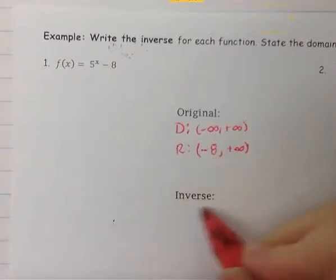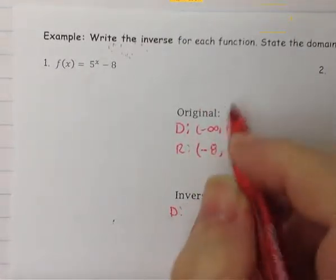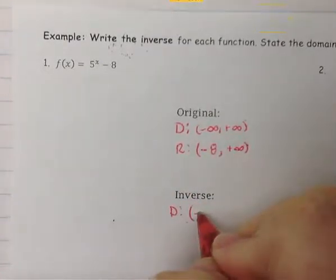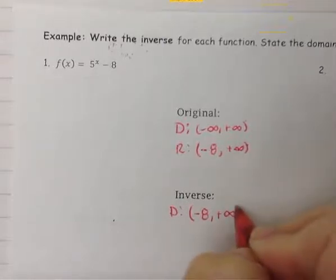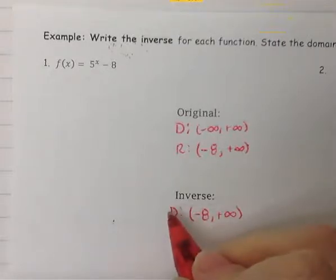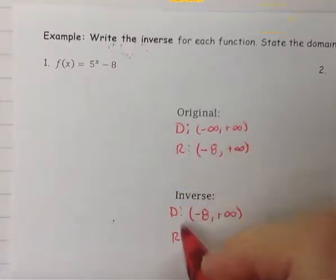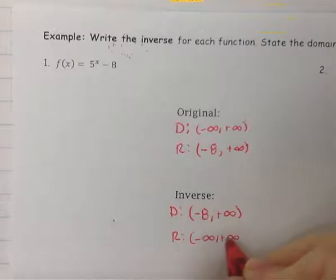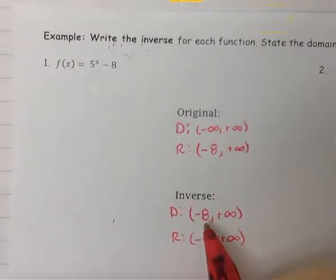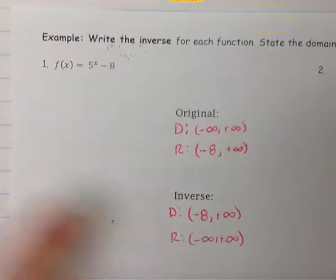We can go ahead and write the inverse domain and range because we have the original. The domain of our inverse will be the same as our original range, so we'll have an asymptote at negative 8 and it will go to positive infinity. Our range will become our original domain, which is negative infinity to positive infinity. The inverse will have an asymptote on the x value, or the h value.